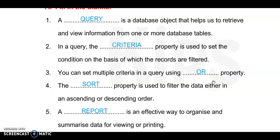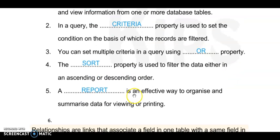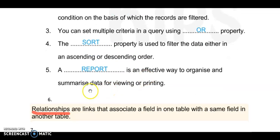Next, the blank property is used to filter the data either in ascending or descending order. It is Sort property. Number five: blank is an effective way to organize and summarize data for viewing by printing. It is Report.